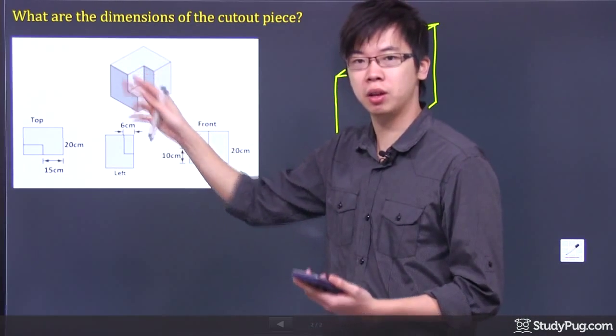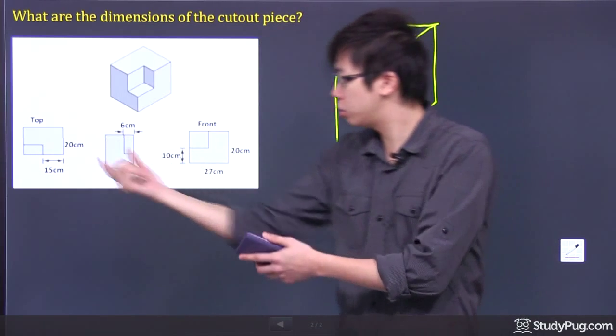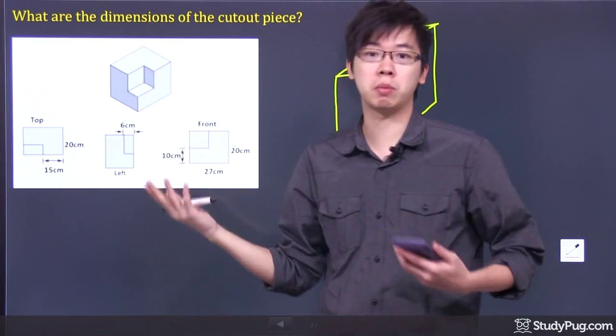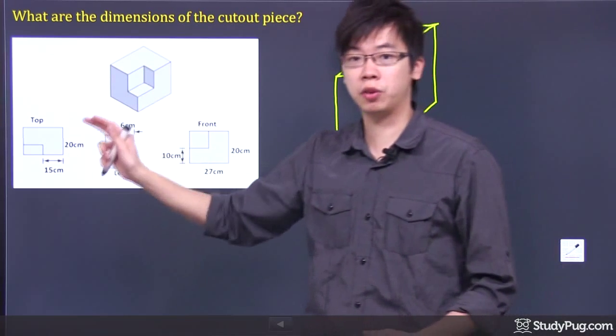So we got a little rectangle right here. We got all sorts of information down here, so we're going to use each piece to determine the dimension of this part that you're going to cut out, which is this part right here. Let's start from the top first.